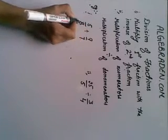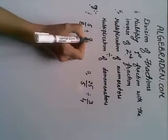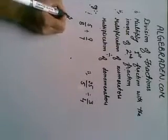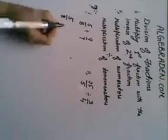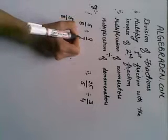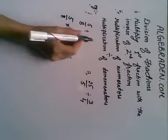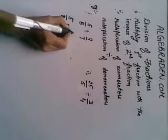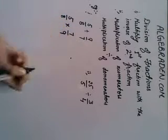First example is 5 over 8 divided by 9 over 7. Following the steps, multiply the first fraction with the inverse of second fraction. The fraction is 9 over 7, so inverse of this fraction will be 7 over 9.